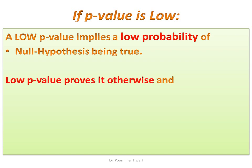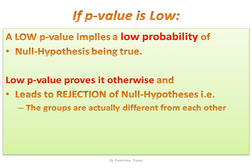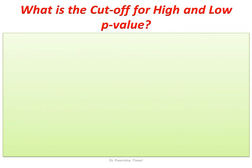A low P-value proves the null hypothesis otherwise and leads to its rejection — meaning the groups are actually different, or the treatment under investigation is effective, or the variables are correlated. So what is the cutoff?